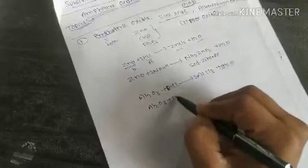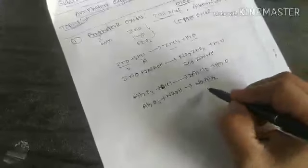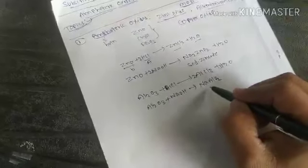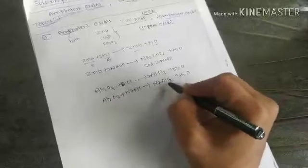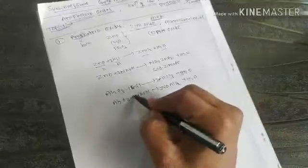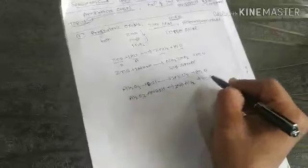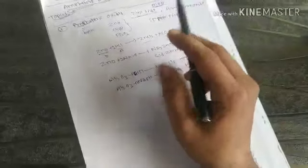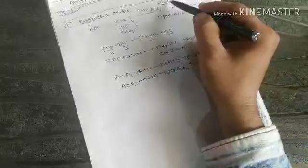Al₂O₃ also reacts with the base NaOH to give NaAlO₂ (sodium aluminate) and water. Balancing: Al₂ requires 2 NaAlO₂ and 2 NaOH. This is completely balanced. So amphoteric oxides react with both acid and base to form salt and water — metallic oxides are normally basic, but these special ones act as both acid and base.